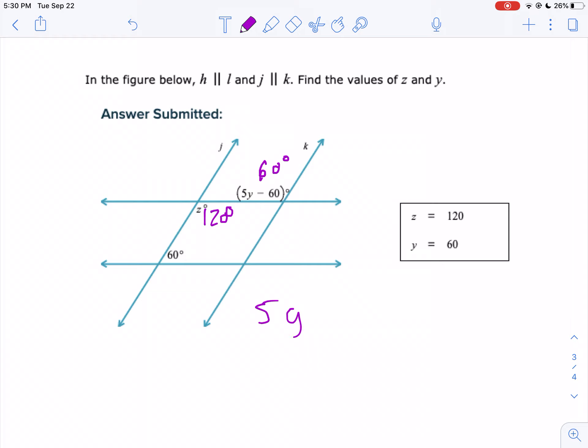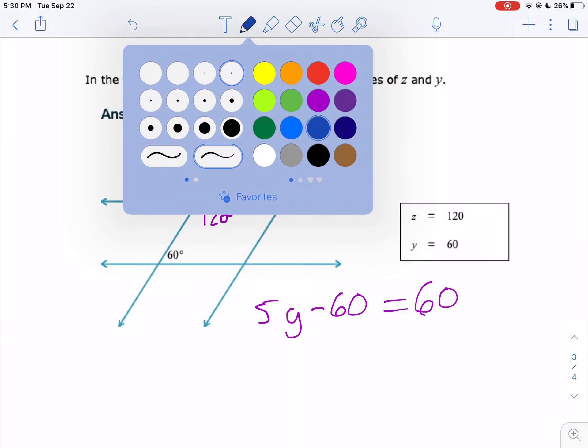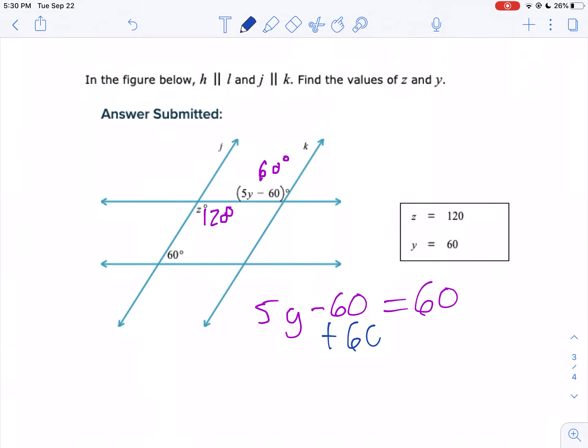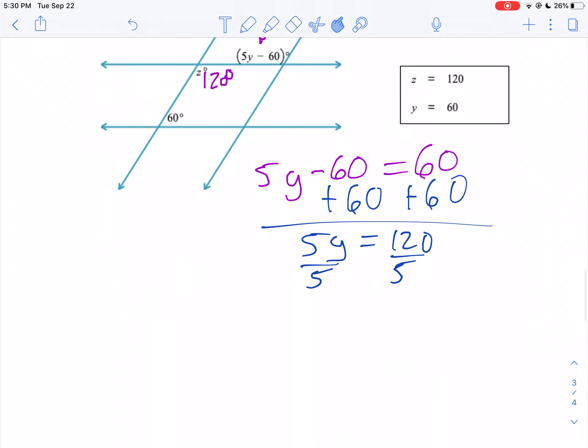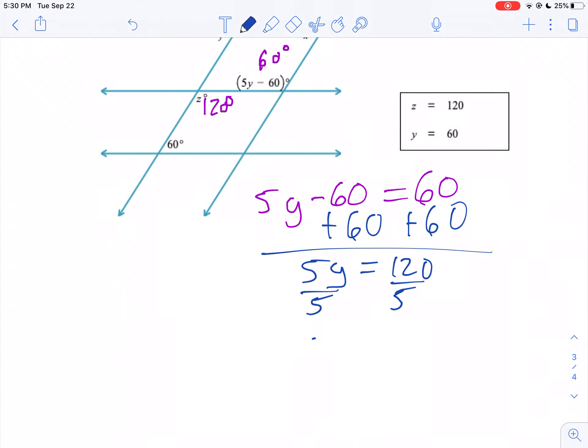So 5Y minus 60 equals 60. Then we do the algebra. Let's add 60 to both sides. 5Y equals 120. We divide both sides by 5.